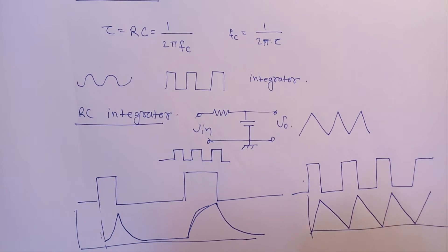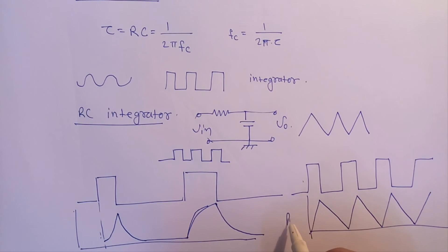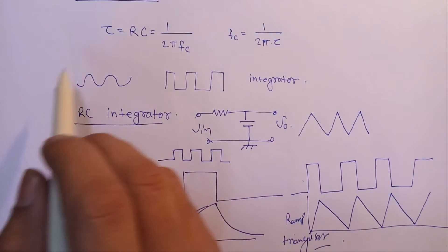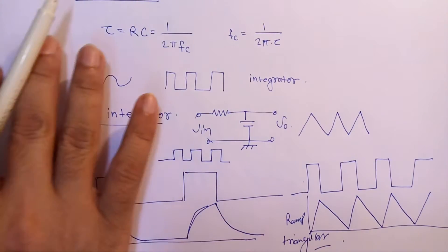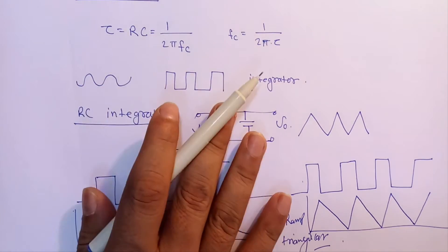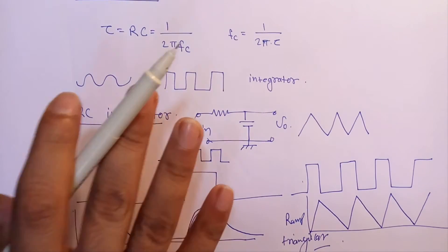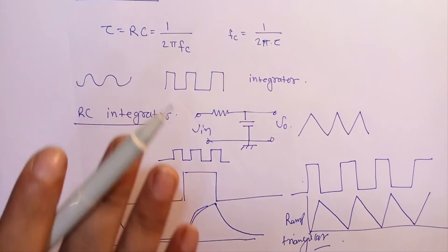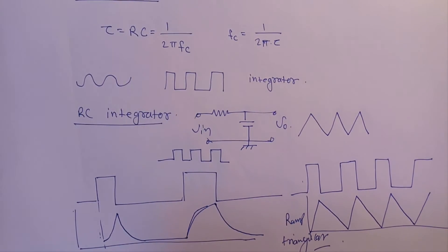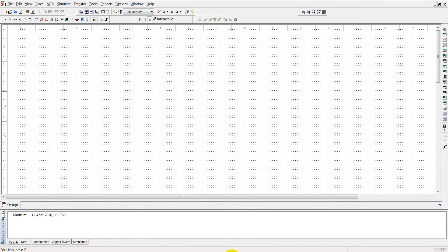We will get a ramp or triangular type of waves. All of this we have seen in the theoretical part. Now let's design it in Multisim and verify what we have discussed. Let's design the first order filter.